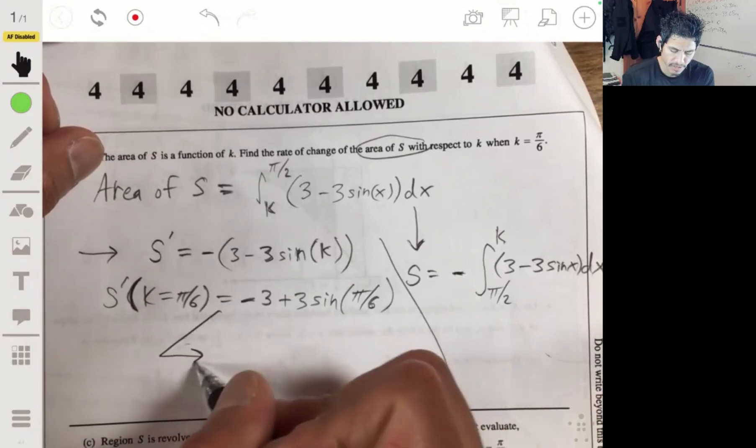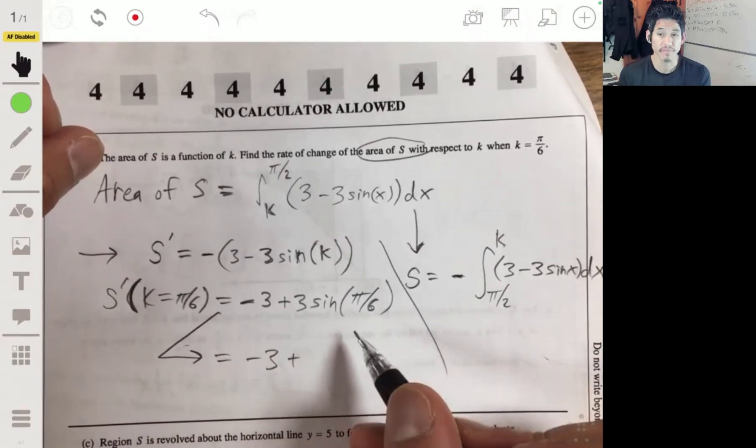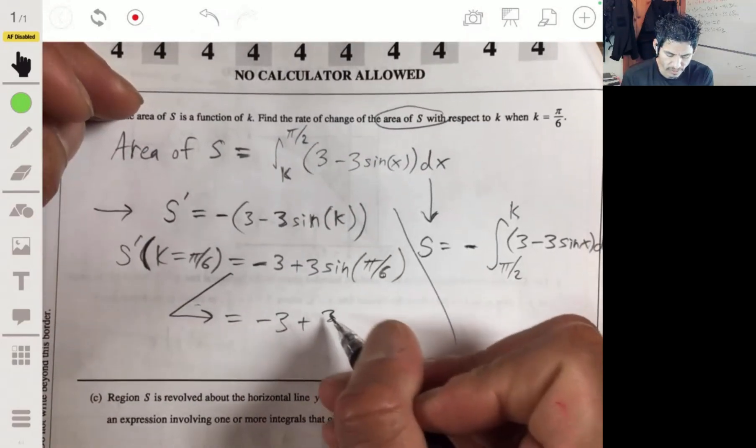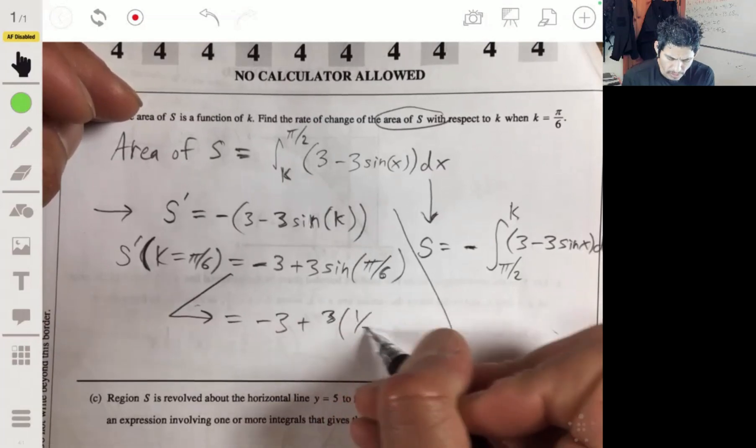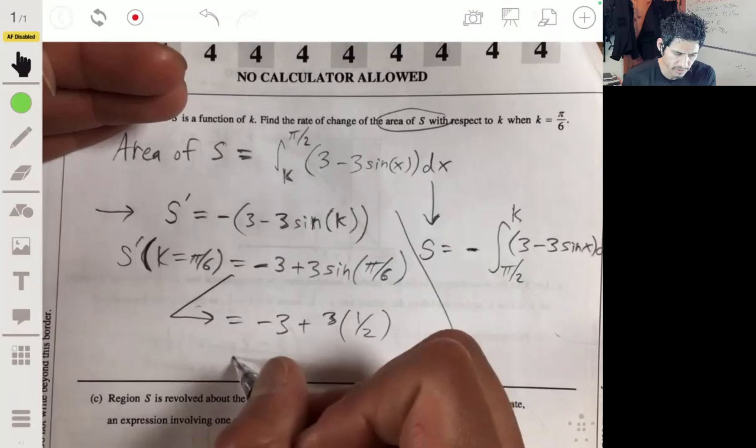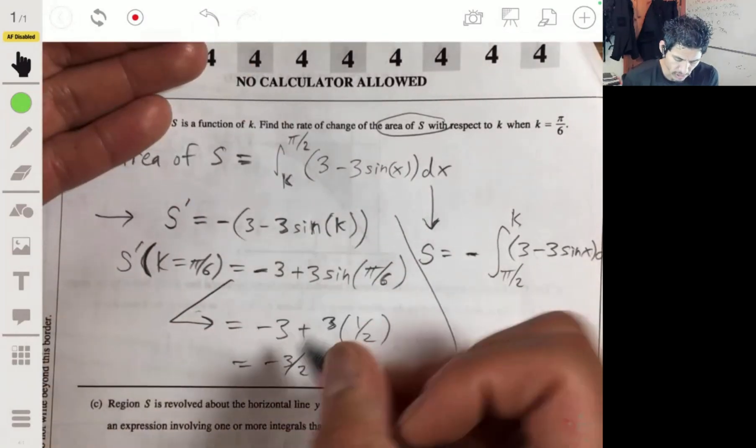This will then be equal to negative 3. Sine of pi over 6 is 1 half. 3 times 1 half. So, negative 3 plus 3 halves, we'll just get negative 3 halves, or negative 1.5. Alright.